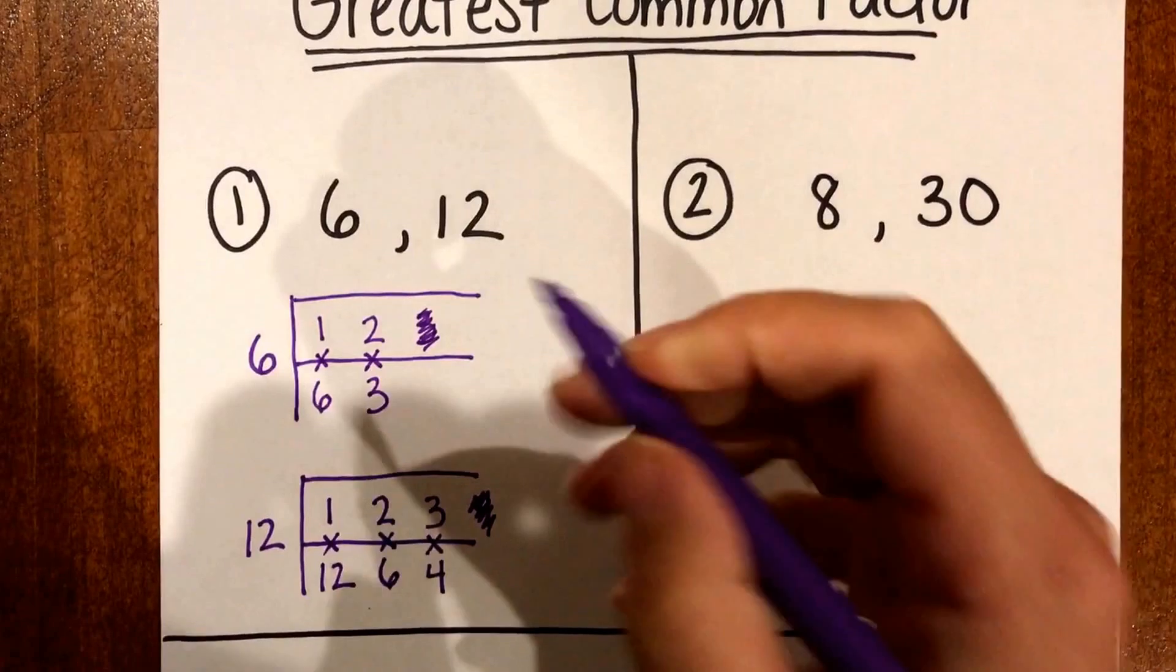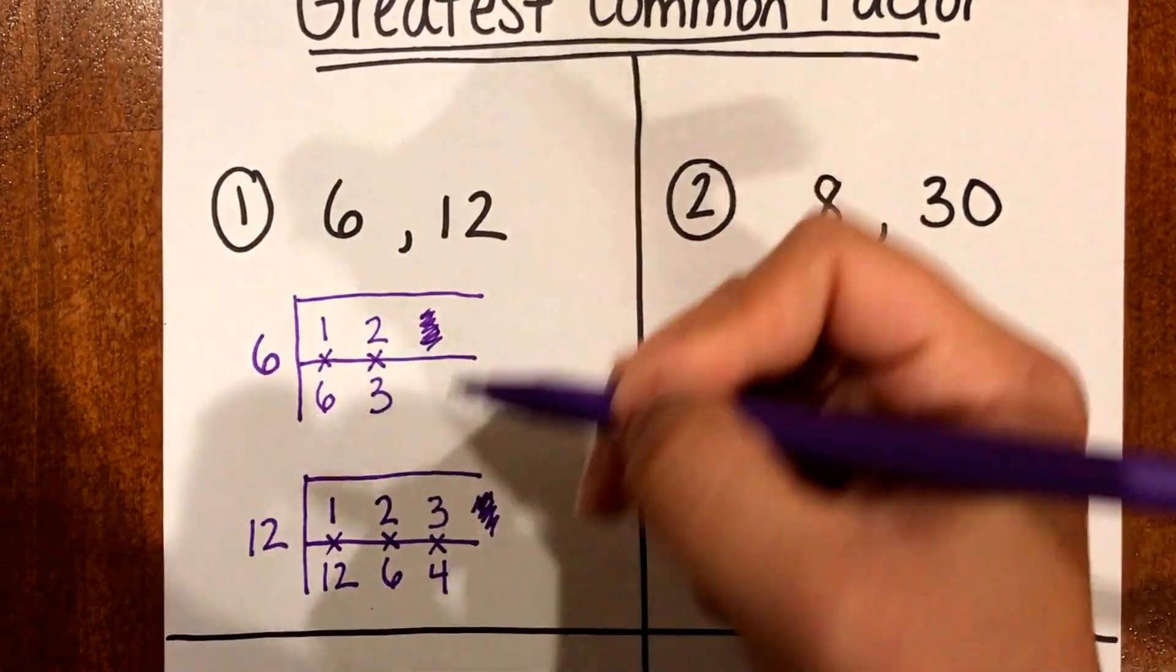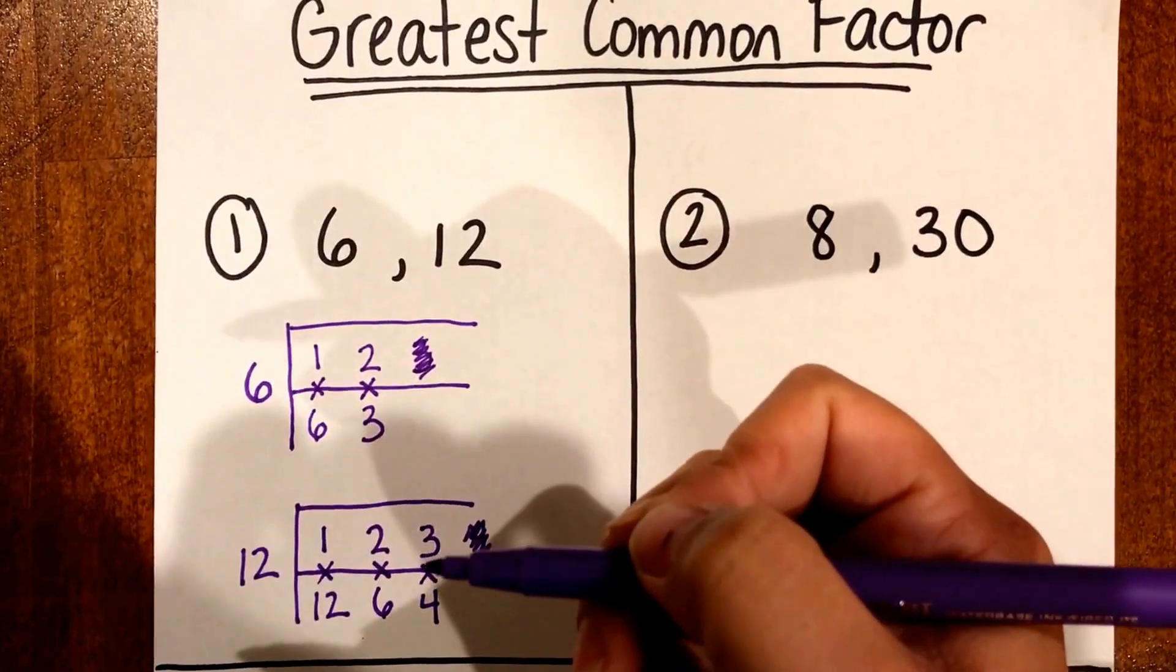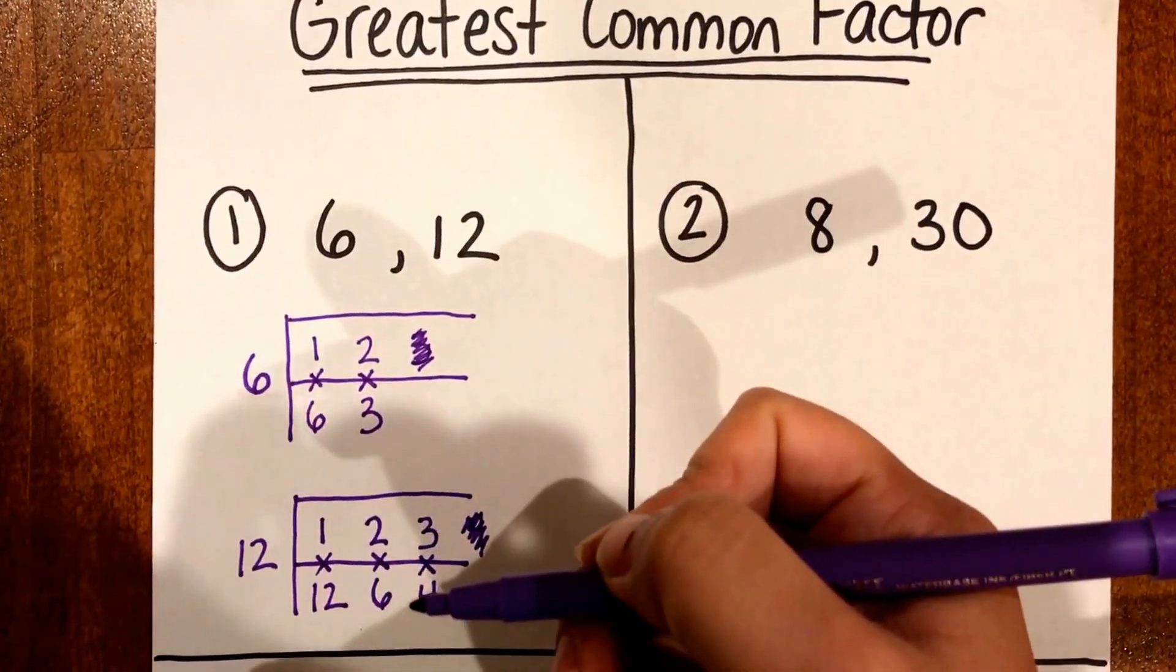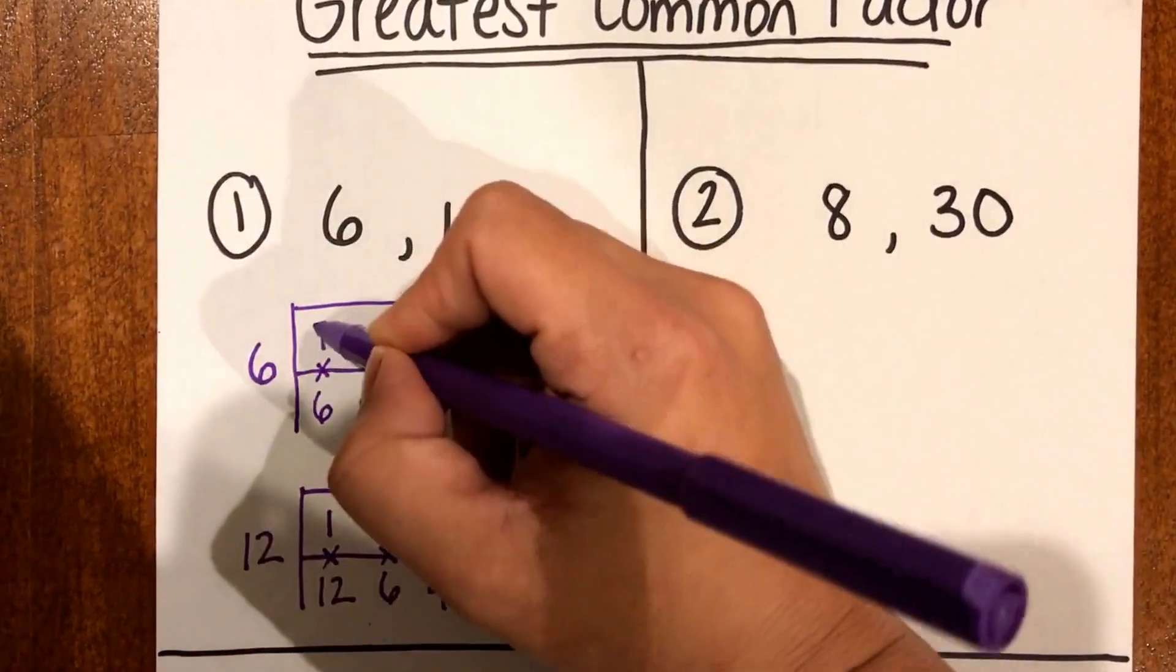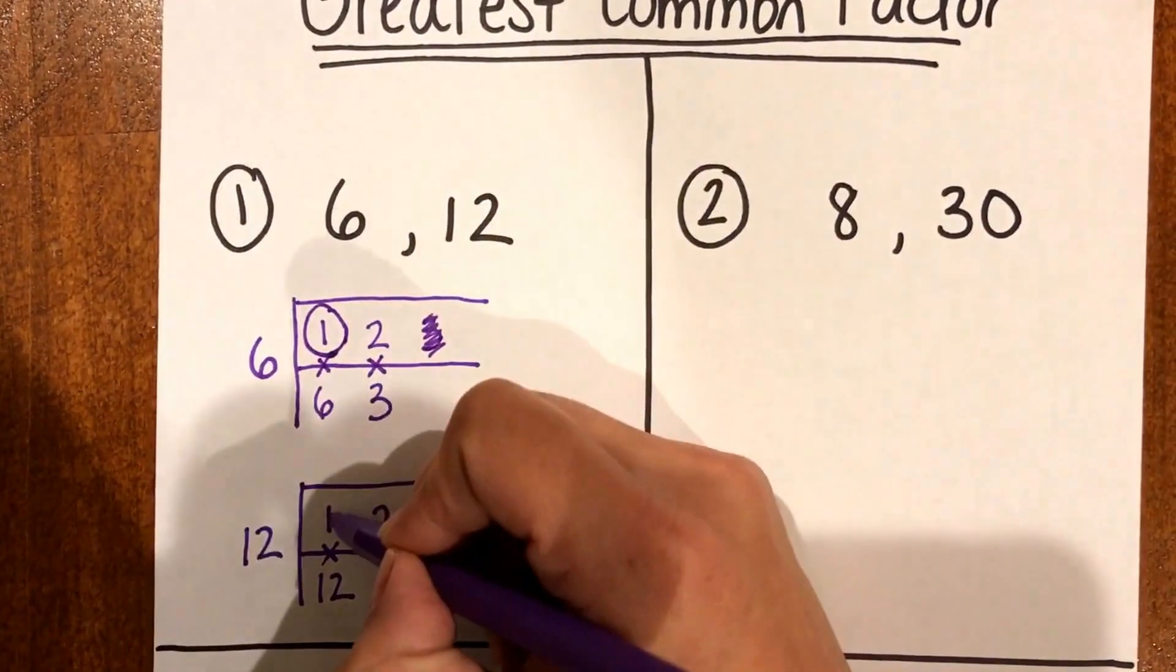Okay so then I have all my factors for 6 and all my factors for 12. Then what I want to do since I'm trying to find my greatest common one between the two I'm going to look at my factors for 6 and 12 and circle the ones that are the same.